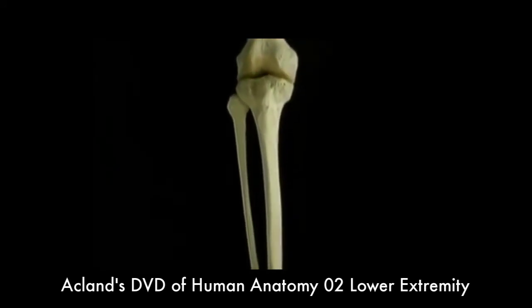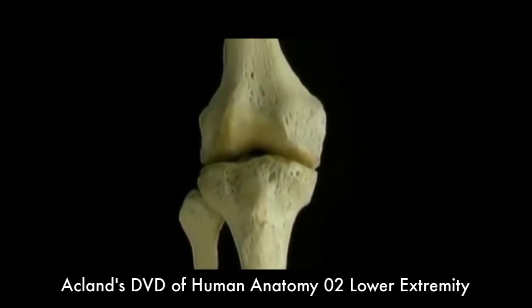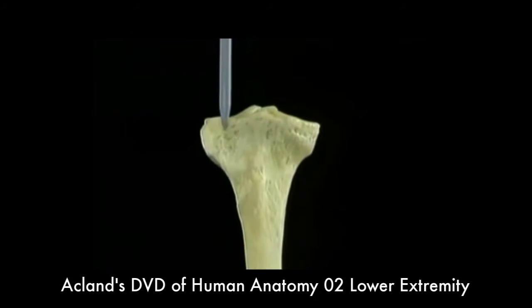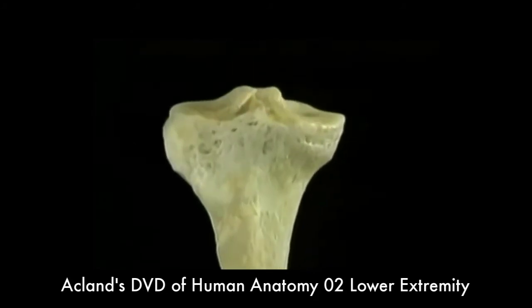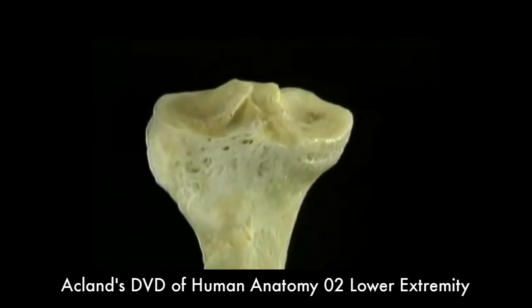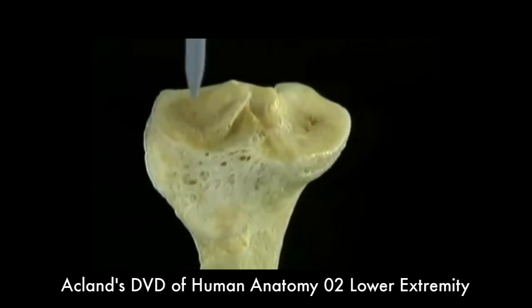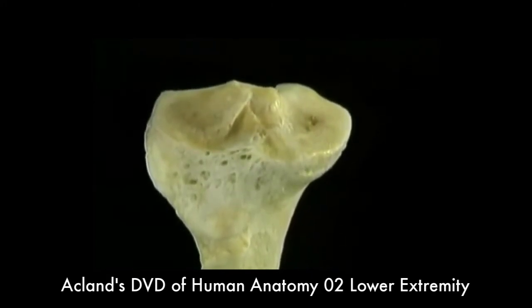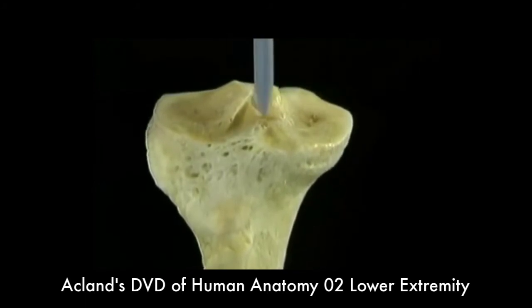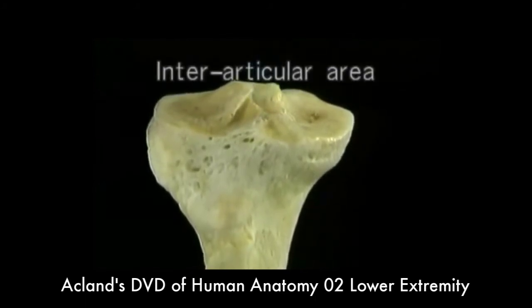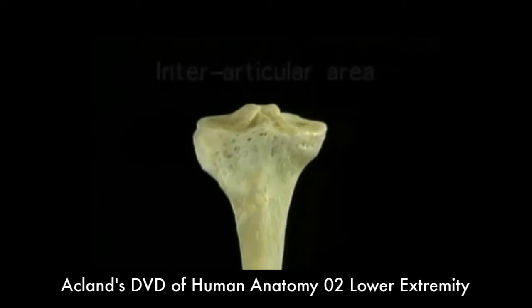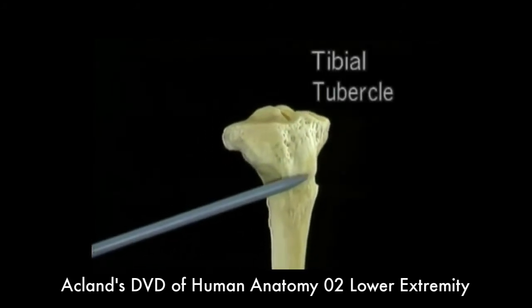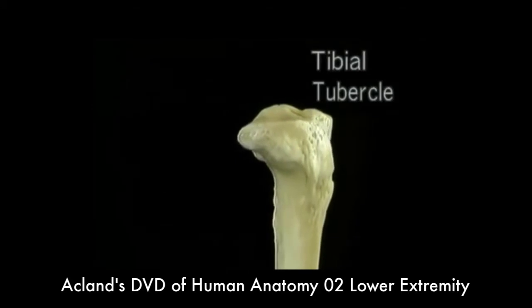Let's take a look at the proximal end of the tibia. This is the medial condyle. This is the lateral condyle. On top of the two condyles are two quite separate articular surfaces, which are much flatter than those on the femur. The rugged expanse between the articular surfaces is the interarticular area. This prominent lump on the front, the tibial tubercle, is the final insertion of the quadriceps tendon.